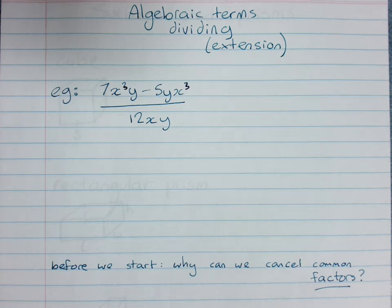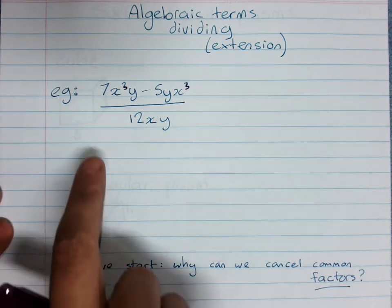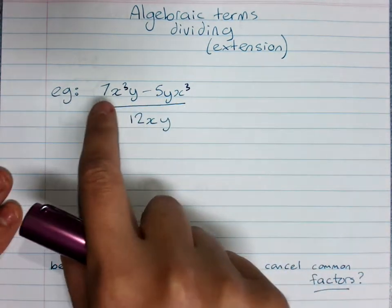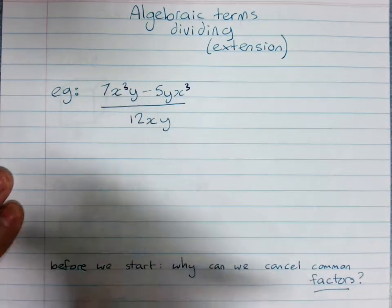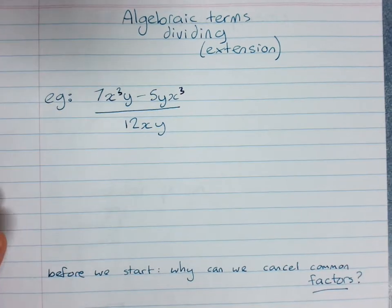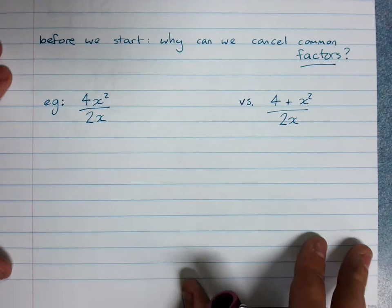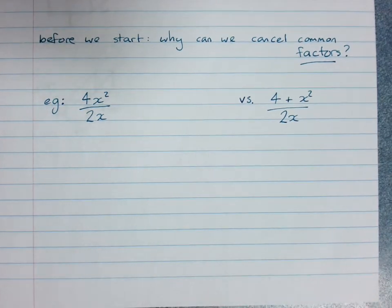Dividing algebraic terms, some extension, and we'd often just be dividing rather more complicated expressions. So we've got an expression divided by a term here. But before we get started, we really do need to know why we can cancel common factors.